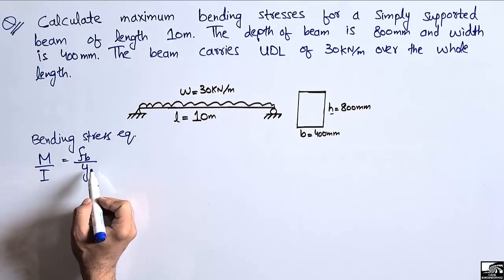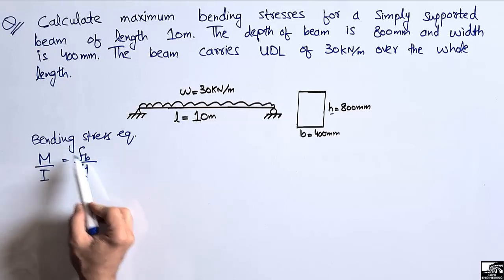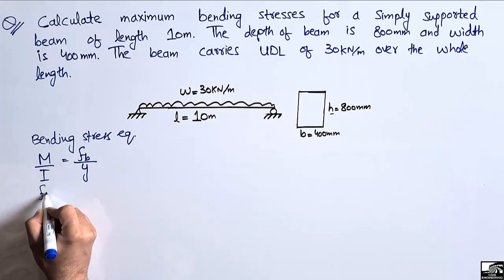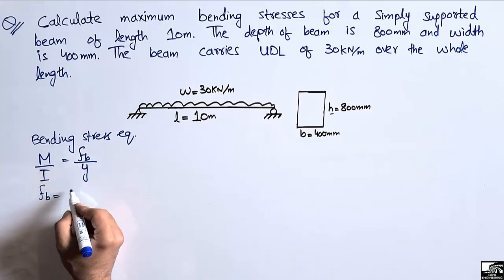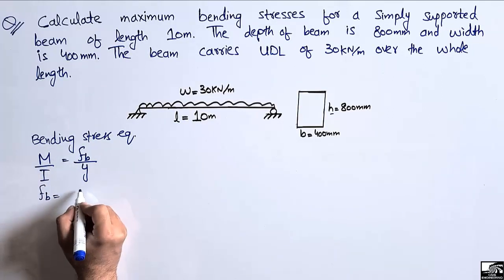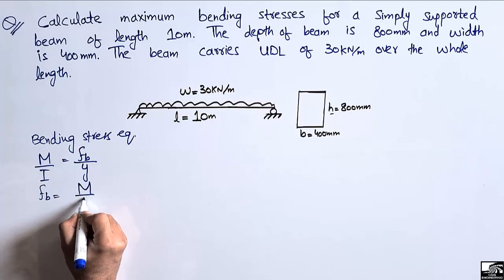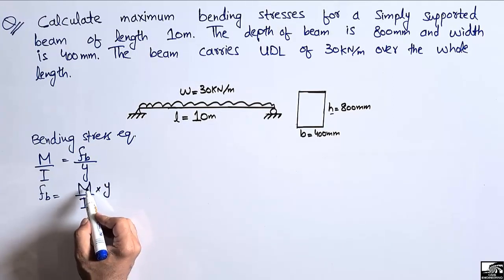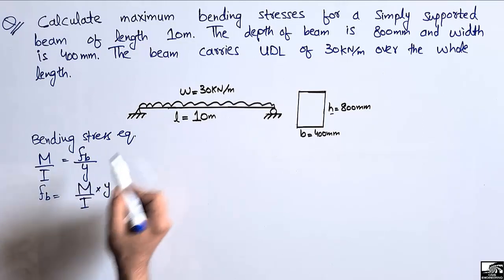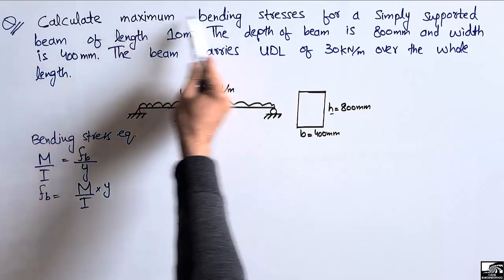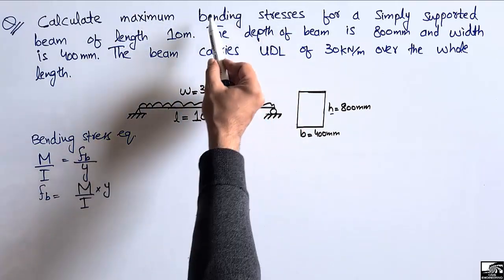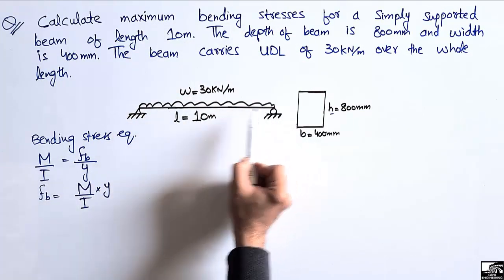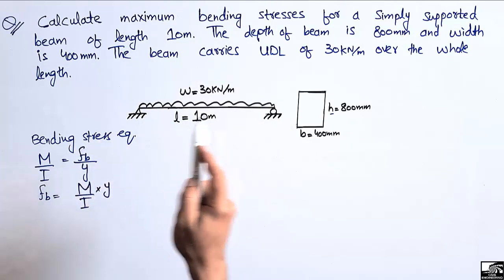Rearranging the bending stress equation, fb equals M divided by I, multiplied by y. Here M is the bending moment value. Since we want the maximum bending stresses, we need to find the maximum bending moment in the beam, because the moment directly relates to the bending stresses.